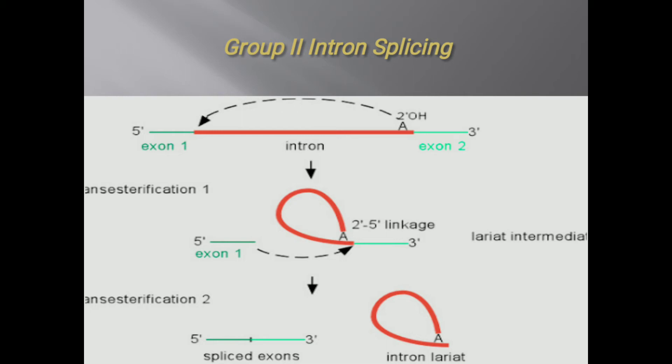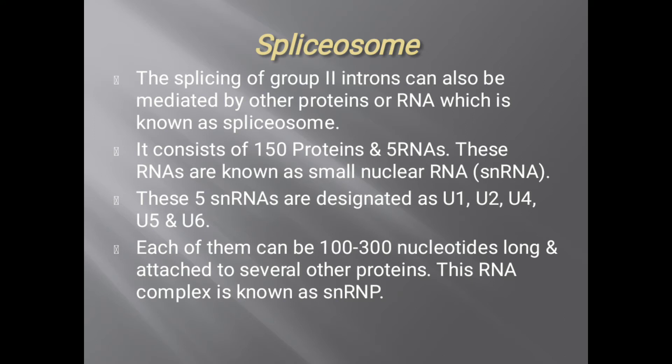In the first step, the hydroxyl of the 5' exon attacks the 5' splice site, which then attacks the phosphodiester bond of the 3' splice site. In the third step, the intron is released as a lariat structure — a loop-like structure. The spliced exons are joined together by a phosphodiester bond. This completes the self-splicing mechanism of Group 2 intron ribozymes.